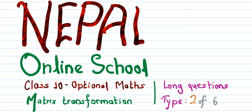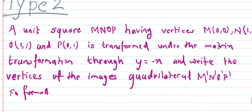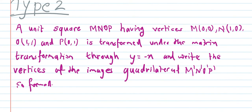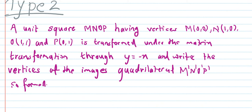We have a type two question related to matrix transformations. The unit square MNOP has vertices M(0,0), N(1,0), O(1,1), and P(0,1). It is transformed under the matrix transformation through y equals to minus x. We need to write the vertices of the image quadrilateral M dash, N dash, O dash, P dash.